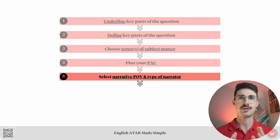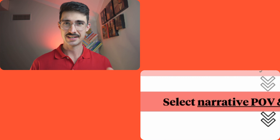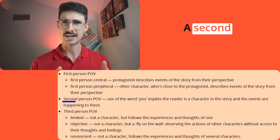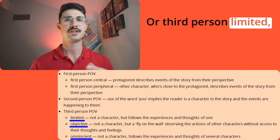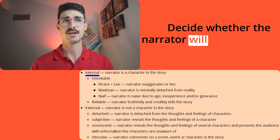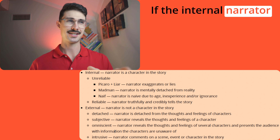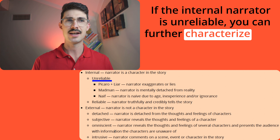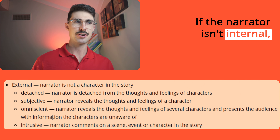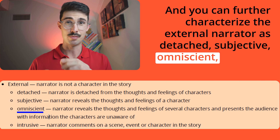Step number five is select your narrative POV and type of narrator. For the narrative POV aspect, you should decide whether you'll tell your story from a first person central or peripheral point of view, a second person point of view, or a third person limited, objective, or omniscient point of view. For the type of narrator, decide whether the narrator will be internal — and if internal, they can be reliable or unreliable. If unreliable, you can further characterise the narrator as the Piccaro, Liar, Madman, or Naif. If the narrator isn't internal, they'll be external, and can be characterised as detached, subjective, omniscient, or intrusive.